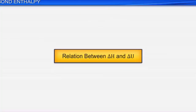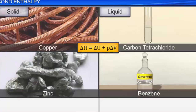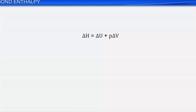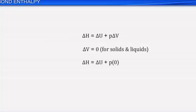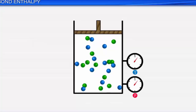Let's look at the relation between ΔH and ΔU. When we deal with solids and liquids, the difference between the change in internal energy ΔU and enthalpy ΔH is not significant. This is because solids and liquids do not show significant change in volume when heated. Thus, if change in volume ΔV is insignificant, it implies that ΔH equals ΔU. The difference between ΔU and ΔH becomes significant when gases are involved in the reaction.